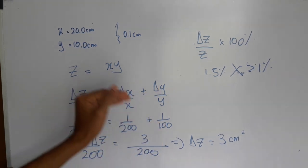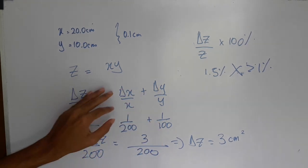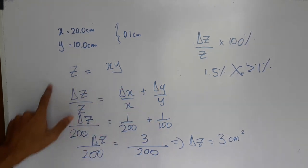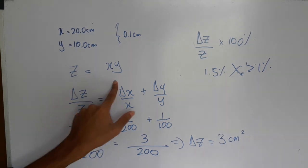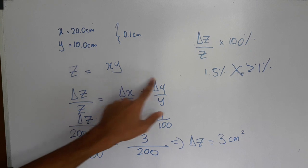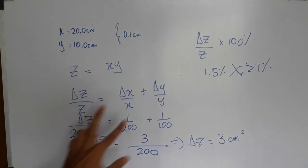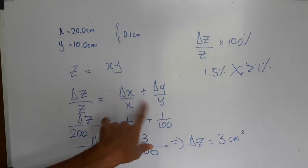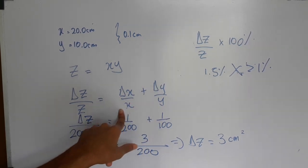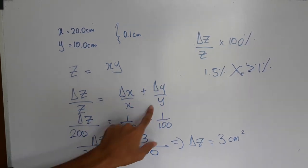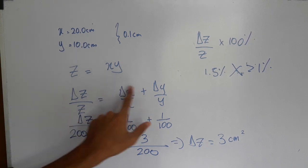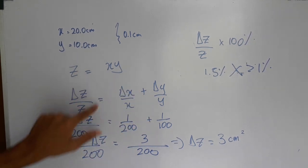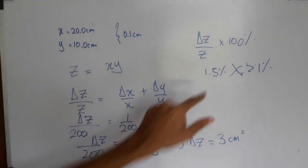Delta z is 1.5x, so delta z is 1.5x. I will use 0.5x. This is 1.5x. You can use 0.5x which is 1.5x.